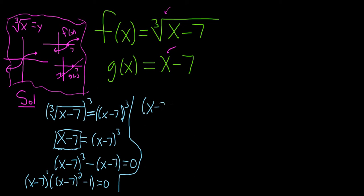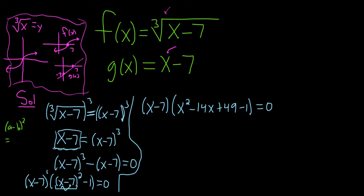This inner factor is x minus 7, which we can expand. Using the formula (a minus b) squared: square the first to get x squared, minus 2 times 7x giving minus 14x, then square the last giving plus 49. So we have x squared minus 14x plus 49, and we still have minus 1, giving x squared minus 14x plus 48, equal to 0.